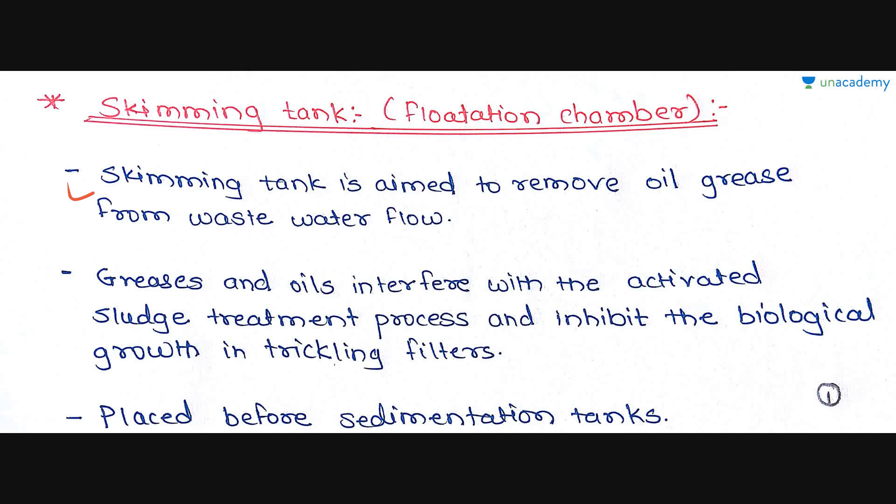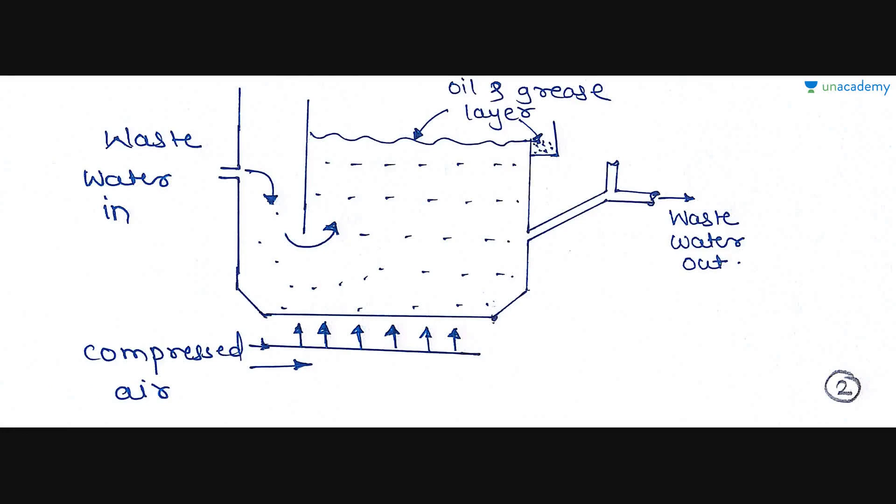Oil and grease are found in large amounts in industrial wastewater. If this grease and oil is not removed, it may interfere with the activated sludge treatment process and also inhibit the biological growth in trickling filters. Skimming Tanks are placed before the sedimentation tank — so after screening and grit chambers comes the Skimming Tank, and then the primary sedimentation tank.